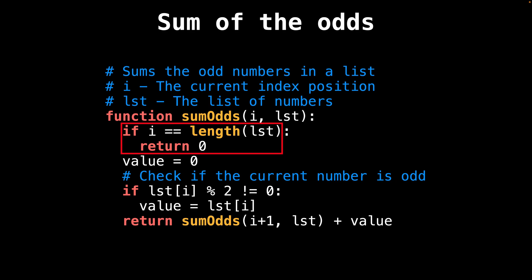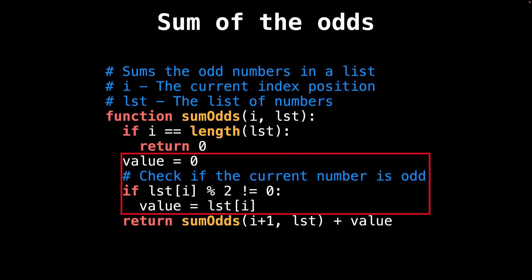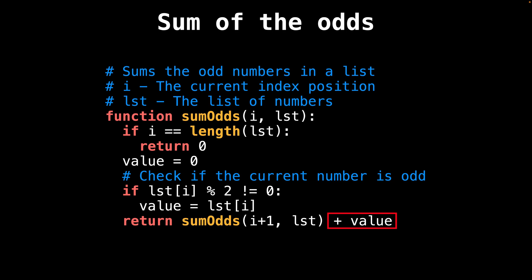At that point we should have visited all the elements already, so we return a value of zero. After that we have the body of the function, which checks if the current element we're at is an odd number. If the number is odd, the value variable gets assigned to the value of that element and it is added to the total; otherwise the variable retains a value of zero when the element is even. The value variable gets added to the sum in the return statement. Lastly, we recursively call sum_odds incrementing the index position to the next position, allowing us to traverse the list from left to right.